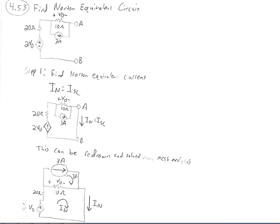In problem 4.53, we're asked to find the Norton equivalent circuit for this circuit. We have a dependent voltage source which gives off the voltage 2VO, where VO is the voltage measured across this 10 ohm resistor. We've got a 20 ohm resistor, a 3 amp current source, and we're asked to find the Norton equivalent relative to terminals A and B. We can do this in two steps: first find the Norton equivalent current, then find the Norton equivalent resistance.